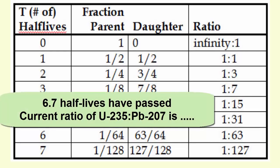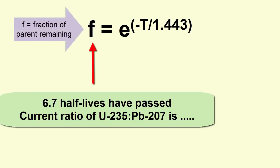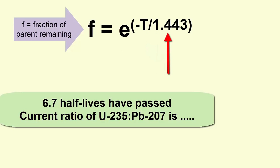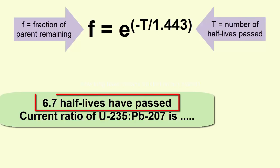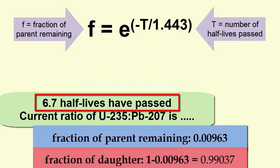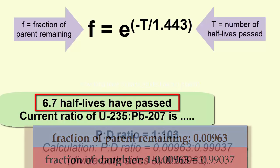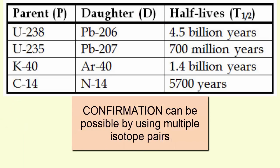So the ratio we'd expect for something that had experienced 6.7 half-lives is somewhere close to 1 to 127, close to 7 half-lives. To be more precise, we use this equation: the fraction of parent remaining equals e to the power of minus t divided by 1.443, where t is the number of half-lives passed. Since t is 6.7, the fraction of parent remaining is 0.00963; the remaining 0.99037 must be daughter, and the ratio is 1 to 103. Calculating age using multiple radioactive isotope pairs is a method we use to confirm our dates.